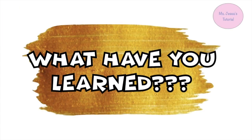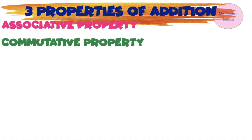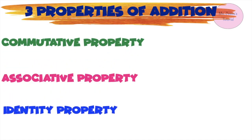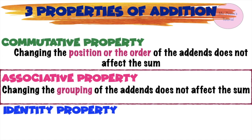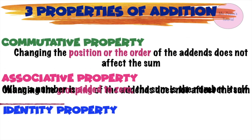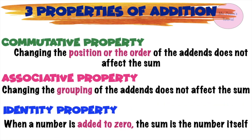So what have we learned? We learned the 3 properties of addition: commutative property, associative property, and identity property. Commutative property — changing the position or the order of the addends does not affect the sum. And lastly, identity property — when a number is added to 0, the sum is the number itself. These are the 3 properties of addition.